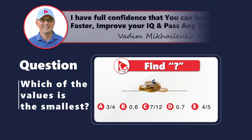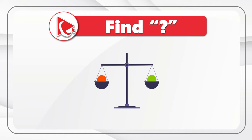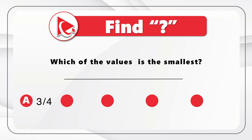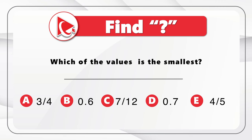Here is one of my favorite questions to test your analytical skills and attention to detail. You need to determine which of the values is the smallest. You're presented with five different values: choice A, three-fourths; choice B, 0.6; choice C, seven-twelfths; choice D, 0.7; and choice E, four-fifths. Take a close look to see if you can come up with the answer.